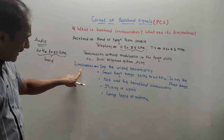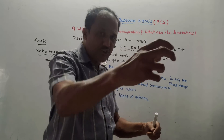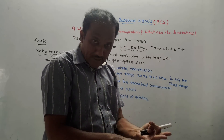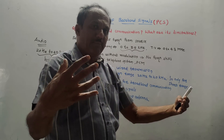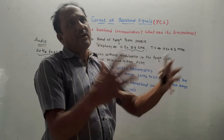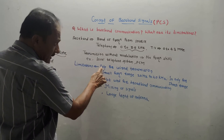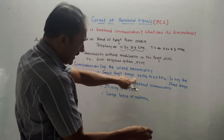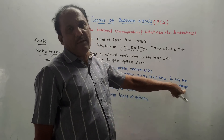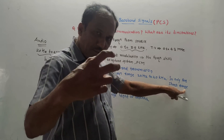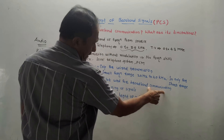Now the limitations of baseband communication. First, it is only used for wired transmission — through coaxial cable or fiber optic cable — and cannot take place through free space or broadband systems. Broadband refers to communication via satellites, fiber optic networks, and so on. Second, the small frequency range of 20 Hz to 20 kHz limits it to short-distance transmission only.